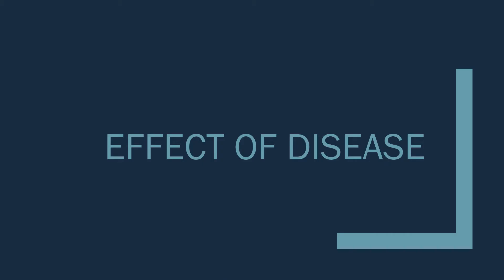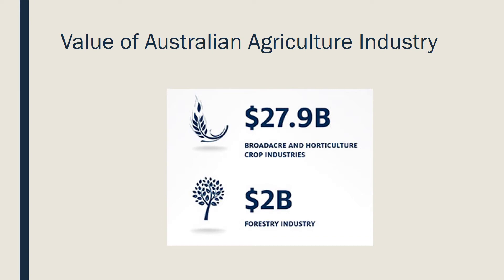Australia is fortunate to be free from many of the world's most damaging plant diseases. These diseases are capable of damaging our natural environment, destroying plant production and agricultural industries, and could even change our way of life. The effect of disease on the agricultural industry would dramatically influence Australia's economy. This could create a knock-on effect from the initial farmers to production factories, shops, and then the consumer.